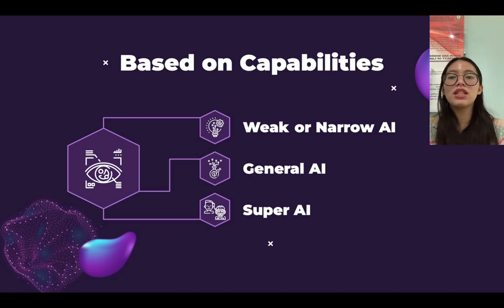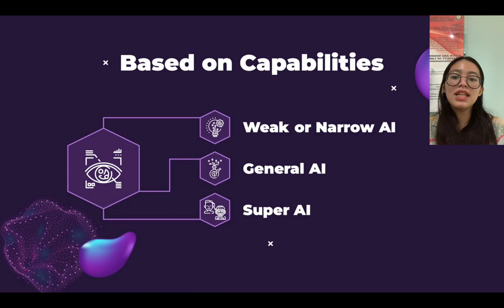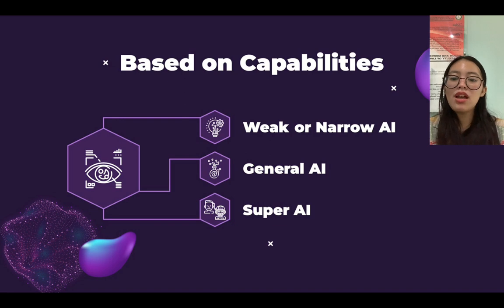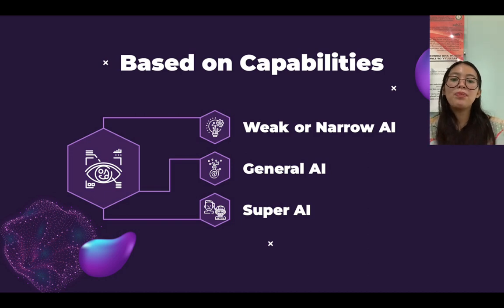The first type is based on capabilities, which is divided into three. The first one is weak AI or narrow AI. Narrow AI is a type of AI which is able to perform a dedicated task with intelligence, as it is only trained for one specific task. Narrow AI can fail in unpredictable ways if it goes beyond its limits. Apple's Siri is a good example of narrow AI, but it operates with a limited predefined range of functions.